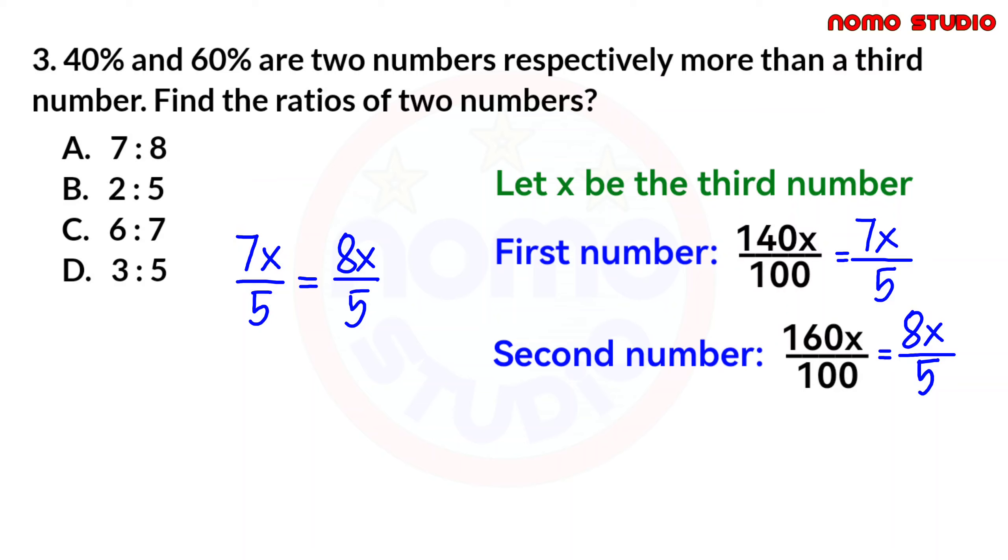But, please be reminded that this is not applicable to all problems. There are instances where we really need to cross multiply to get the right answer. But now, let's continue with the process of cross multiplication to see what the result will be. We have 7x times 5 and that is 35x. 8x times 5 and that is 40x. Now, we have 35x is to 40x.